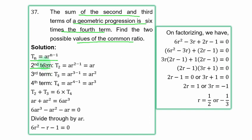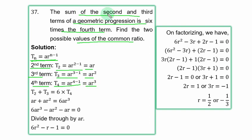At the second term, n is equal to 2; replace n with 2 and you have a·r. At the third term, n equals 3; replace n with 3 and you have a·r². At the fourth term, n equals 4; replace n with 4 and you have a·r³. The sum of the second and third terms, t₂ plus t₃, is equal to 6 times the fourth term.